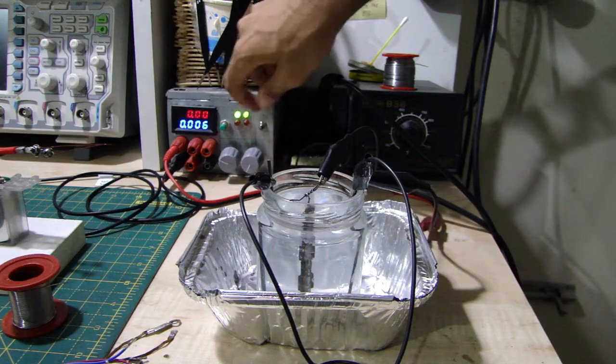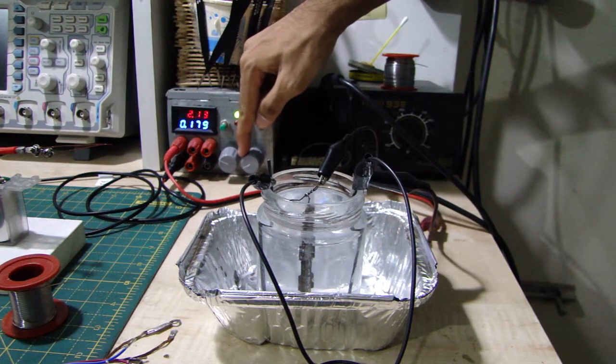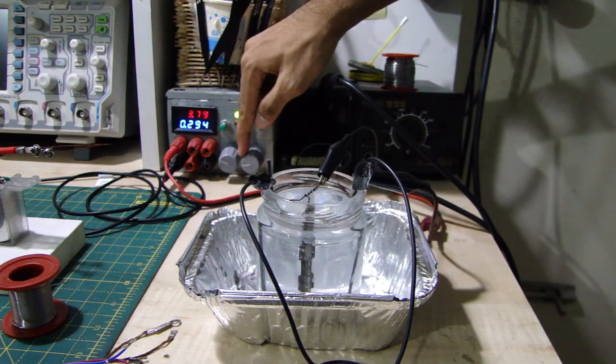The ideal current density is about 0.1 amps per square centimeter, so for my case 710 milliamps should be perfect.